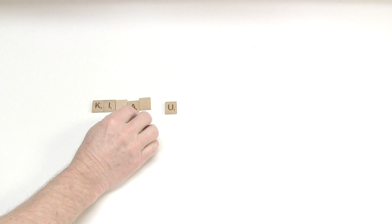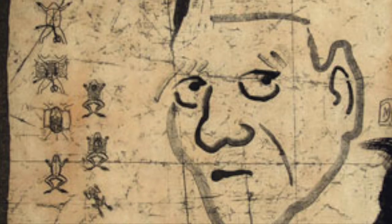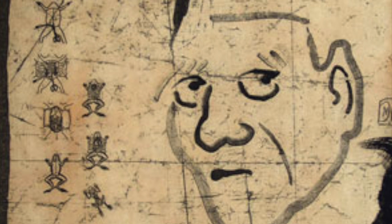You lumbering oaf! scowled Basho. At five foot nine inches, Kikaku towered over the diminutive master. That's not even close. Anyone else?